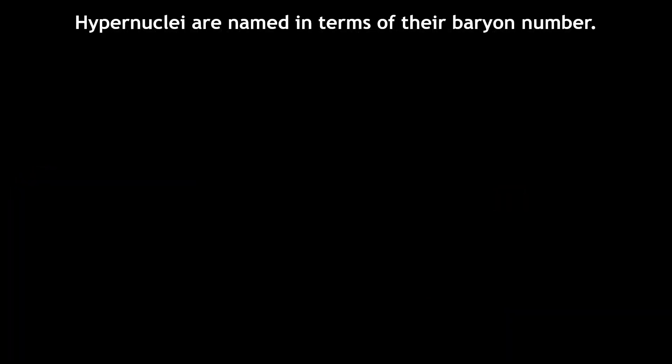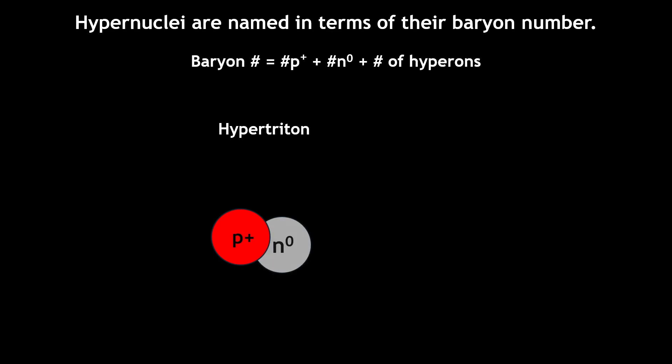Hypernuclei are named in terms of their baryon number, which is a sum of the number of protons, neutrons, and hyperons. The simplest hypernucleus is the hypertriton, which consists of one proton, one neutron, and one lambda baryon.